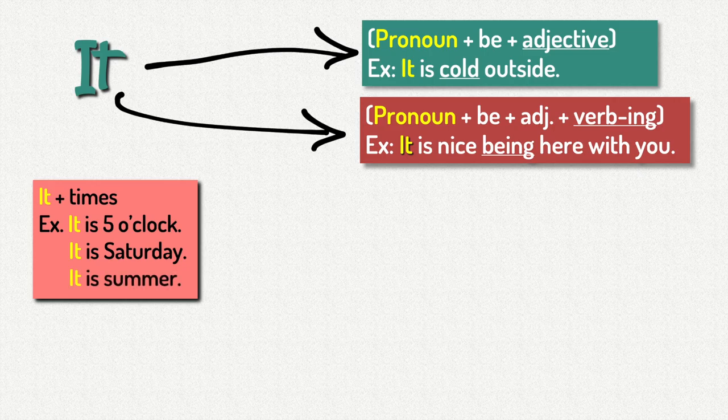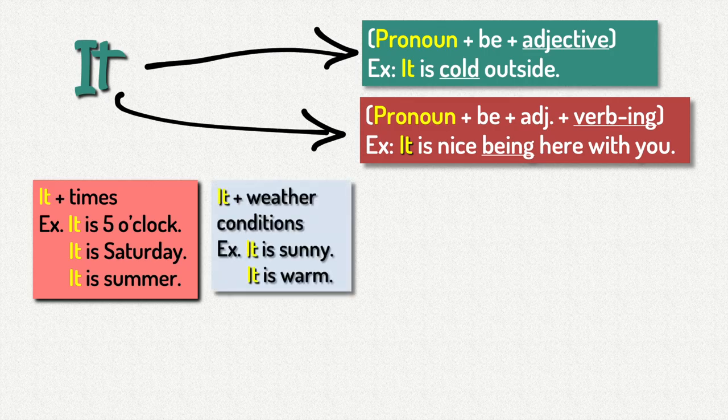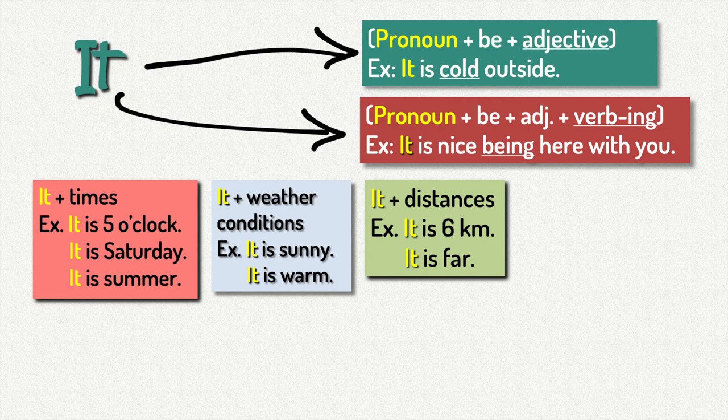So it can also be used with times, like in this example. It is 5 o'clock. It is Saturday. It can also be used for weather conditions, like it is sunny, it is warm. It is also used with distances. It is 6 kilometers. It is far.